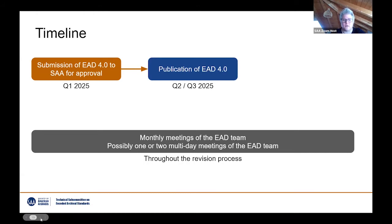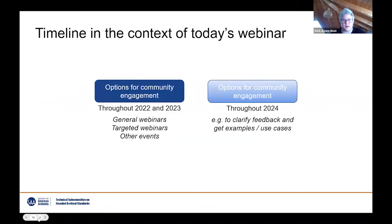This is something we have seen during the recent revision of EAC-CPF, our sibling standard — that in-person meetings definitely help achieve a common understanding and common basis for further conversations. What we really want to do in this revision process is to open up the conversation with the community throughout the whole revision process, with webinars, targeted sessions on specific parts of the description, or other events where we can engage with the community and check back with you to get your thoughts and ideas.